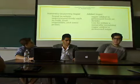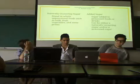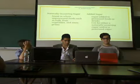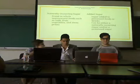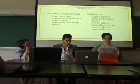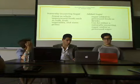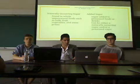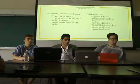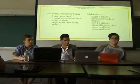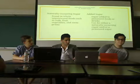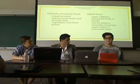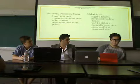The difference between naturally occurring sugar and added sugar: naturally occurring sugar is found in whole, unprocessed foods such as milk, fruit, vegetables, and some grains. Added sugar is sugar added to processed foods or drinks beyond what's naturally there. The sugar they add can be a naturally occurring sugar or a processed sugar, and they add excess sugar to foods to make them sweeter and for other purposes.